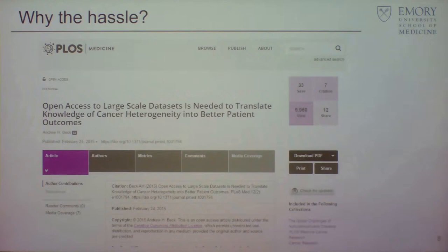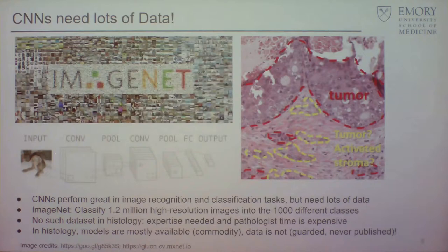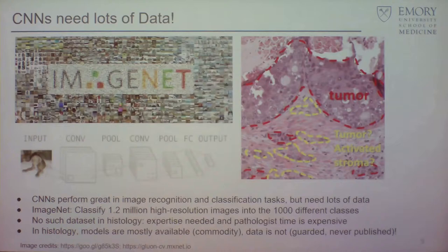So why the hassle? Why do we care about this? You're probably all familiar with ImageNet and COCO — multi-million image datasets people use to train image analysis algorithms. The way those are annotated, you take an image, it goes through convolutional filters, and gradient backpropagation learns to map an image to probabilities — dog, cat, etc. The problem is these models need lots of examples to train, and in histology, which requires a lot of expert knowledge, we don't have that. There is no ImageNet in histology.